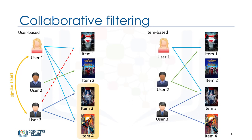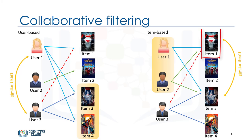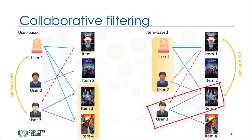In the item-based approach, similar items build neighborhoods based on the behavior of users. Please note, however, that it is not based on their contents. For example, item 1 and item 3 are considered neighbors, as they were positively rated by both user 1 and user 2. So item 1 can be recommended to user 3 as he has already shown interest in item 3. Therefore, the recommendations here are based on the items in the neighborhood that a user might prefer.